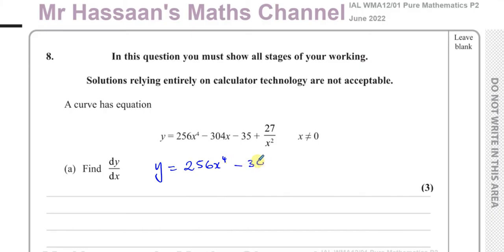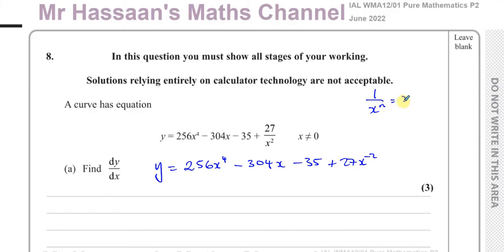But the last term needs to be modified before it can be differentiated. I have to write the x term in the numerator, so I'll write it as 27x to the power of negative 2, using the rule that 1 over x to the power of n is the same as x to the power of negative n — one of the rules of indices. So now it's ready to be differentiated.